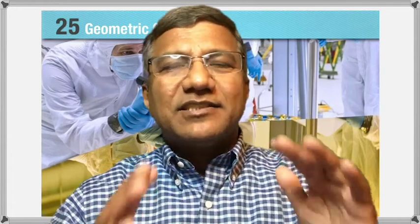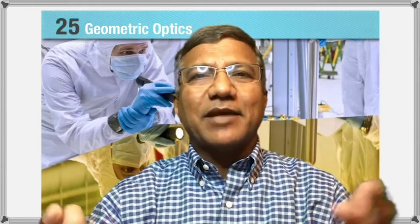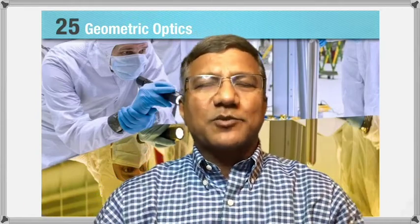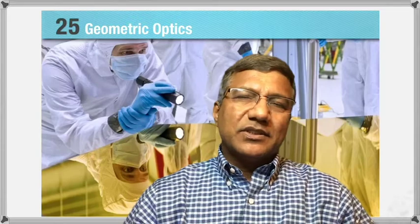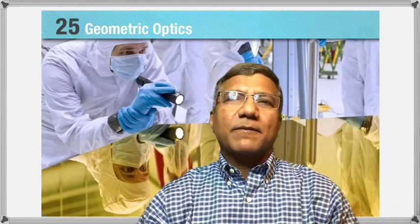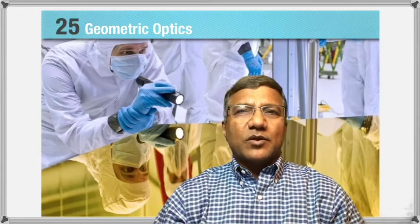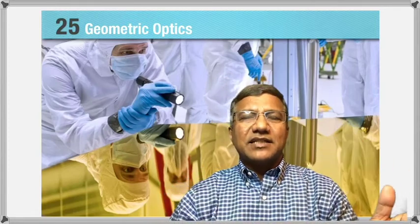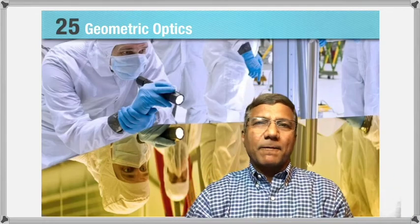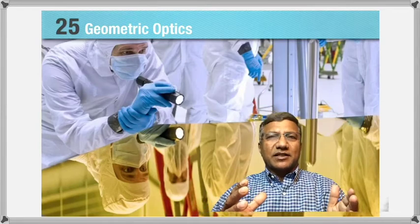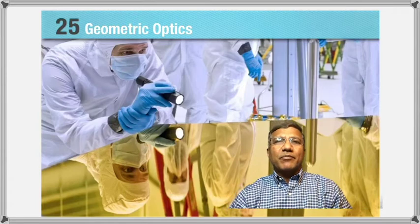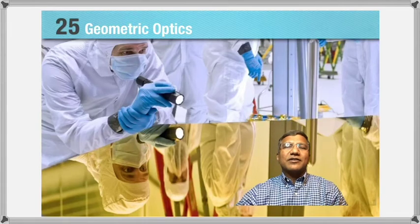Light. How would our world look like without light? Light is how we see objects — it's basically the reflection of light that enables us to see objects. But light has other properties like refraction, diffraction, interference, and so on. There are two ways to study light. This is geometrical optics, where the obstacle size is much greater than the wavelength of light. But in the next chapter, when we deal with objects that are much smaller than the wavelength of light, that is called wave optics.